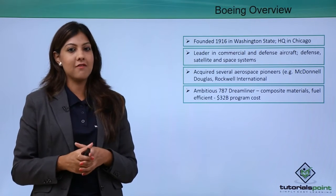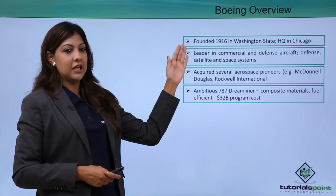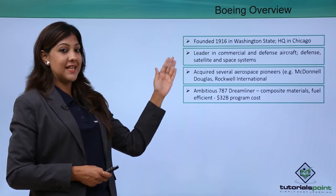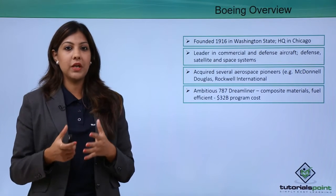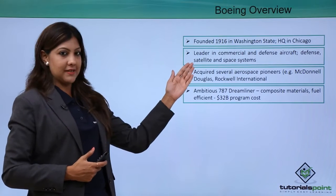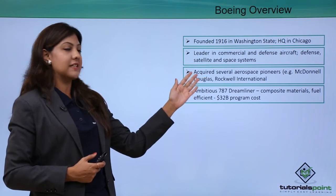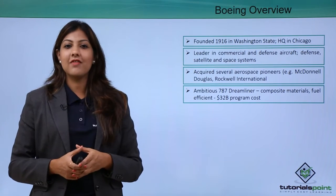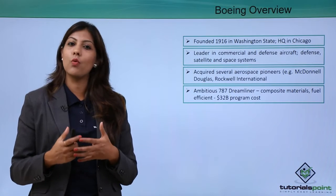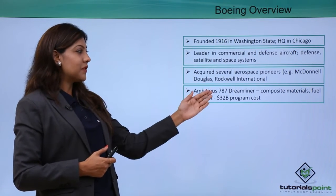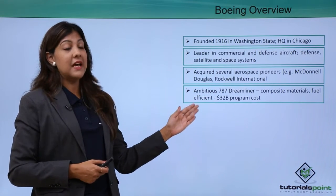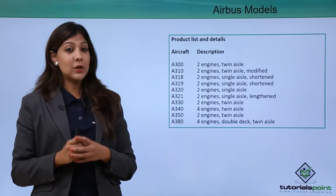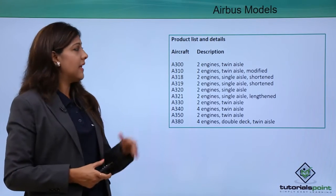Boeing was founded in 1916 in Washington DC and has its headquarters in Chicago. It is a leader in commercial and defense aircraft, defense satellites, and space systems. Boeing has acquired several aerospace pioneers including McDonnell Douglas and Rockwell International. Its ambitious Boeing 787 Dreamliner uses composite materials, is fuel efficient, and the program cost is 32 billion dollars.